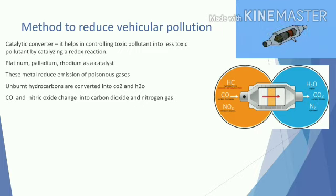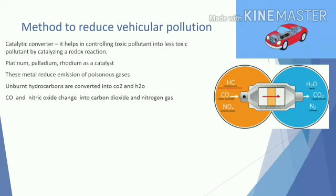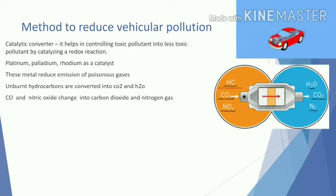Lorries, auto-rickshaws, and two-wheelers contain expensive metals — platinum, palladium, and rhodium — which act as catalysts in the catalytic converter. These catalysts help convert poisonous gases and hydrocarbons, including carbon dioxide and other emissions, into less harmful substances.